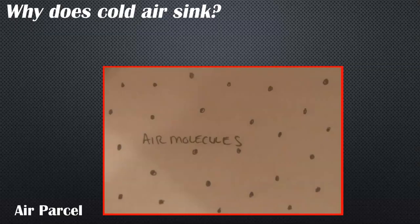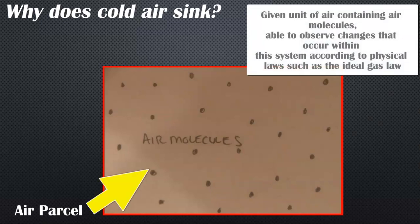To begin with, you take an air parcel, which is a given area or volume of the atmosphere that contains air molecules. We do this to separate it from the atmosphere as a whole, so we can look at a definitive system and volume of air and the effects when you change temperature,